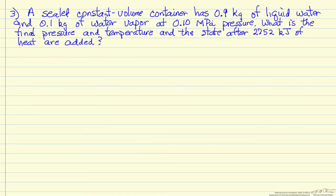In this problem, we are going to look at a sealed constant volume container that starts out with 0.9 kg of liquid water and 0.1 kg of water vapor. It is at 0.1 MPa pressure. And then the question is, if we add heat to this system, namely 2752 kJ, what is the final pressure and what is the final temperature?